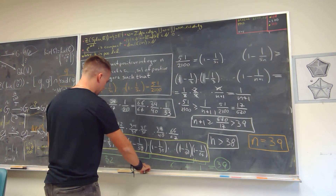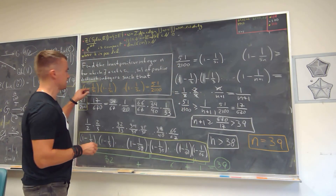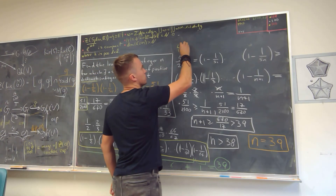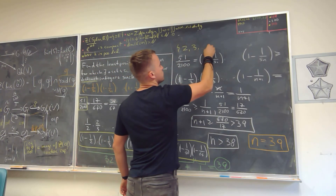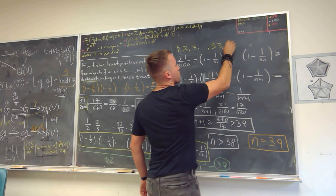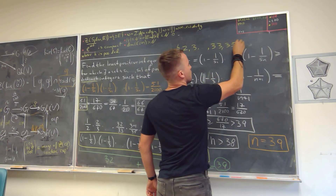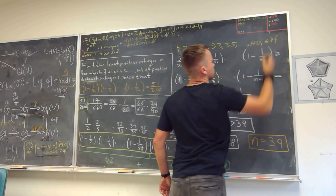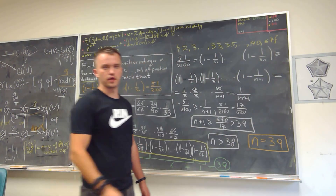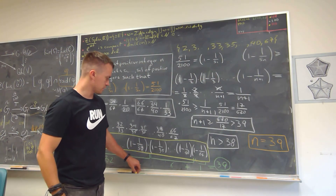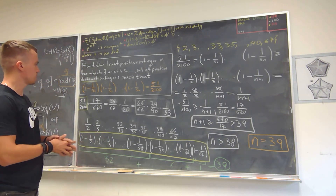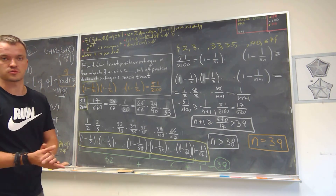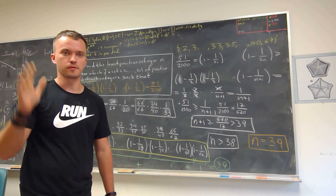So our answer is: the set that works for this case consists of exactly the numbers 2, 3, up to 33, then 35, up to 40, and 67. And we are done. Thank you for watching. I hope that you enjoyed this problem. Let me know if you have any questions, and if you're not subscribed to my channel, please subscribe. Bye.